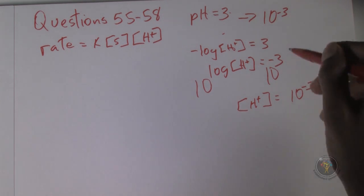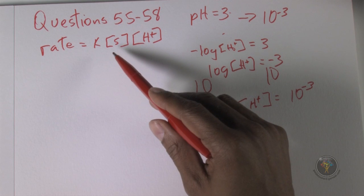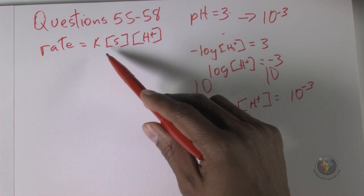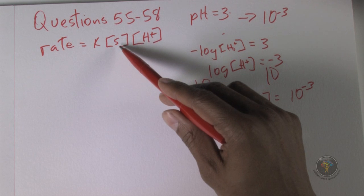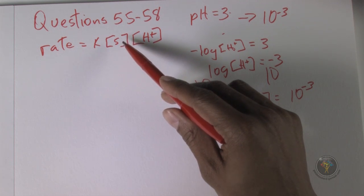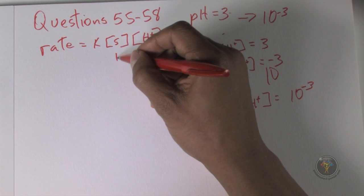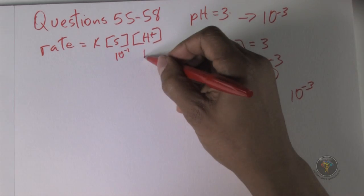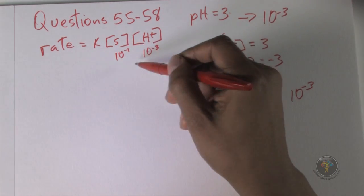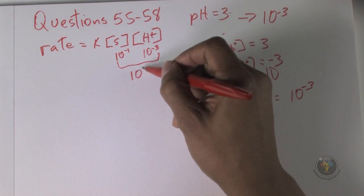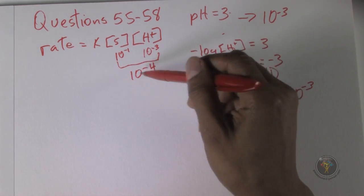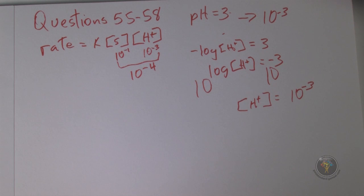We have k which is 1.4 times 10 to the minus 5, we have S which is 10 to the minus 1, and H+ is 10 to the minus 3. Multiplied together, S and H+ give us 10 to the minus 4. Then multiply by k: 1.4 times 10 to the minus 5 times 10 to the minus 4 gives 1.4 times 10 to the minus 9. The answer is A.